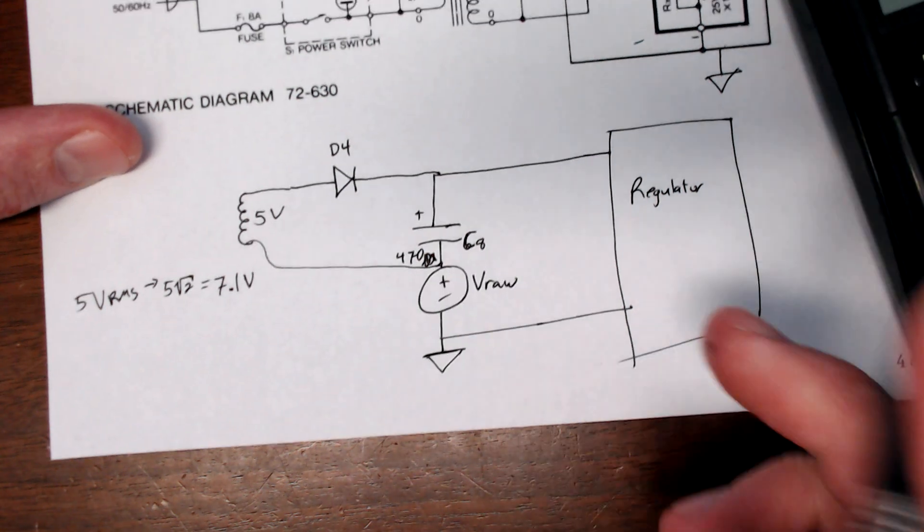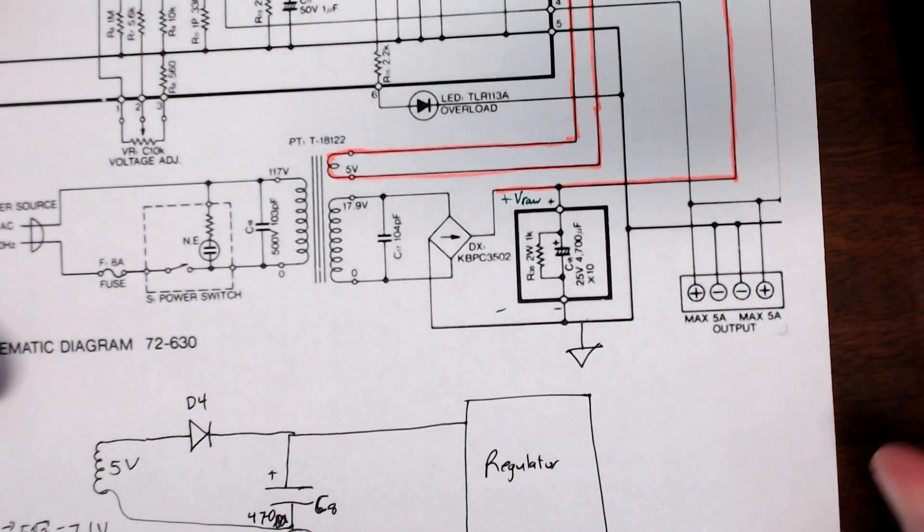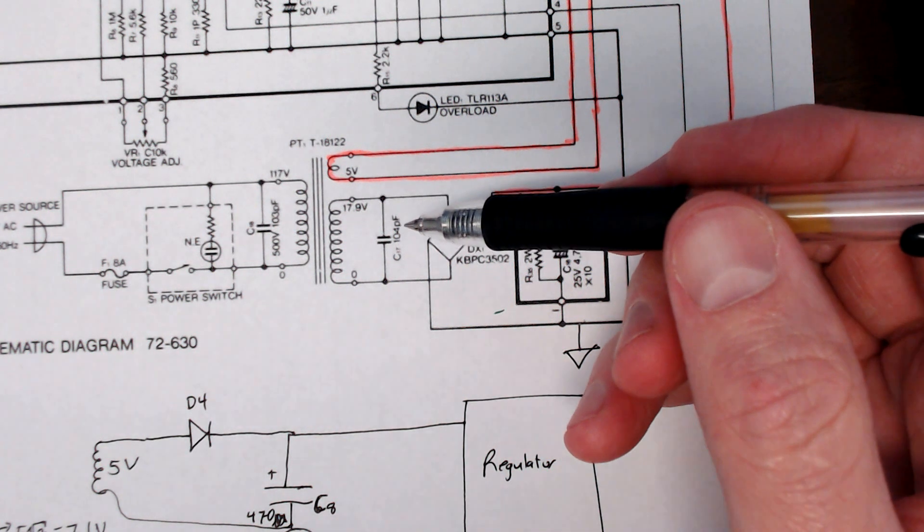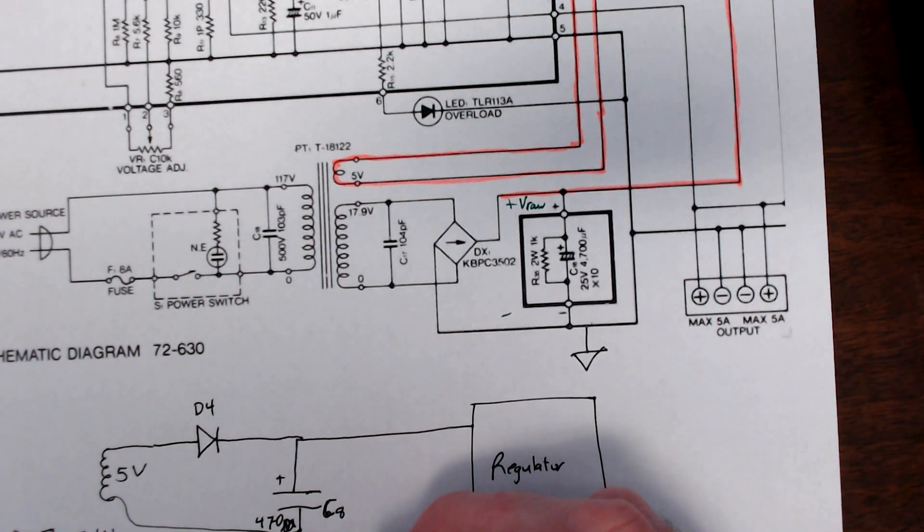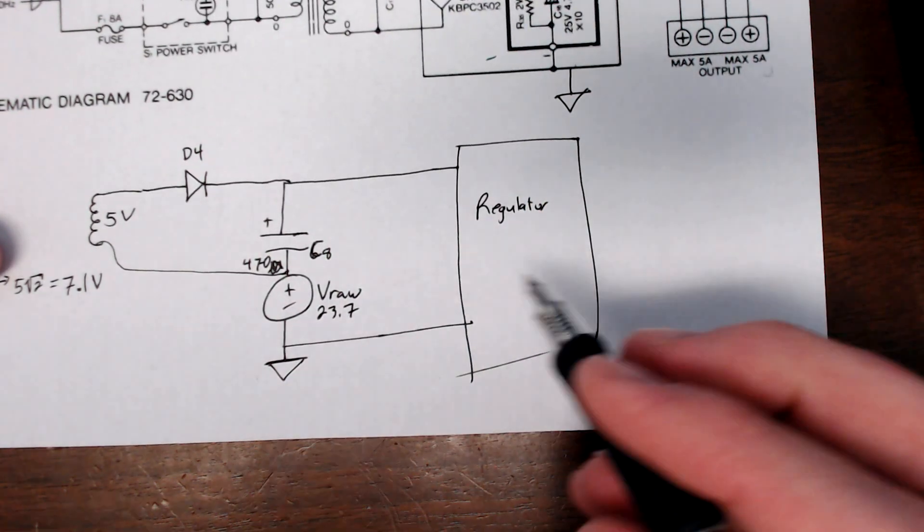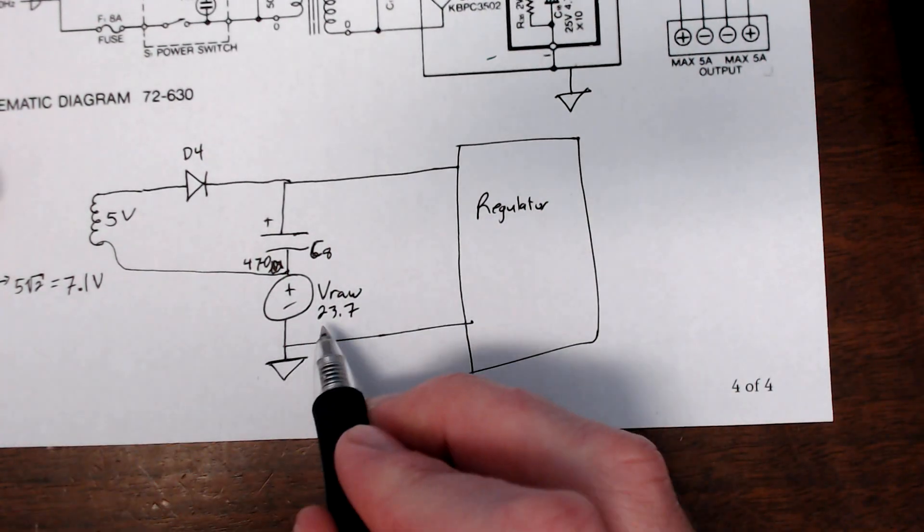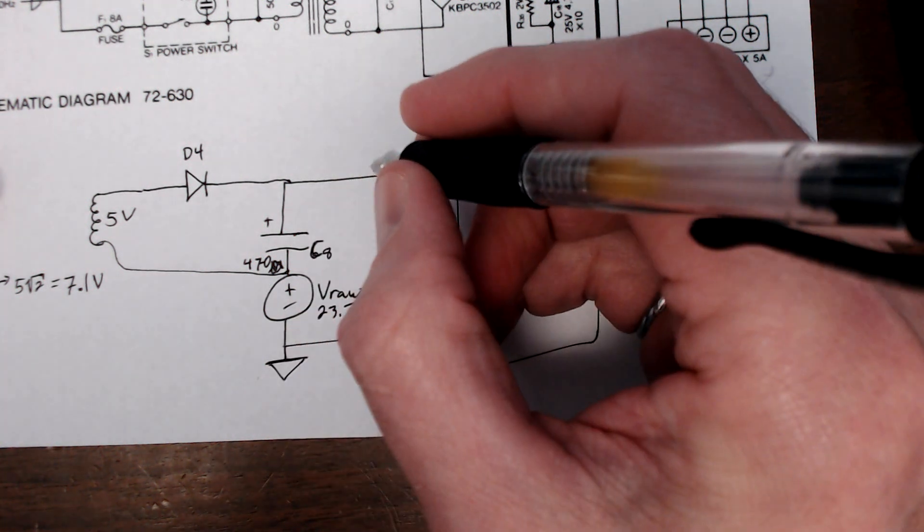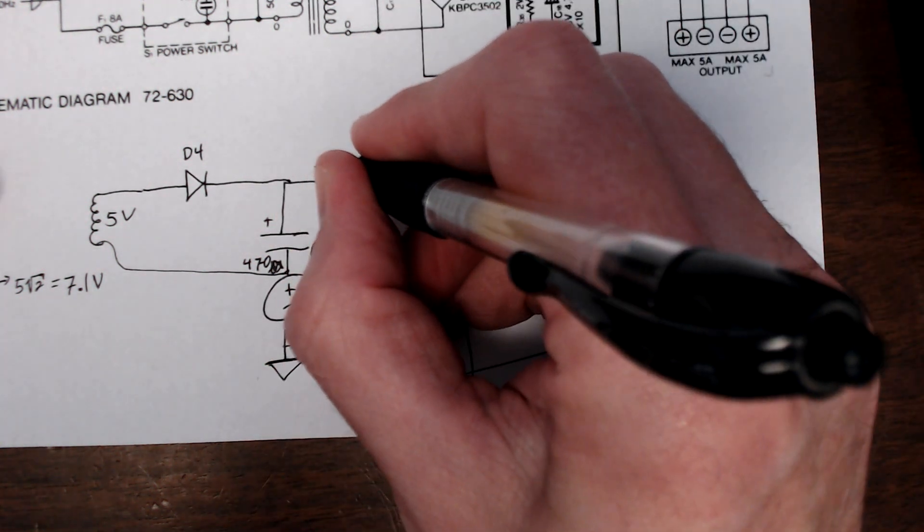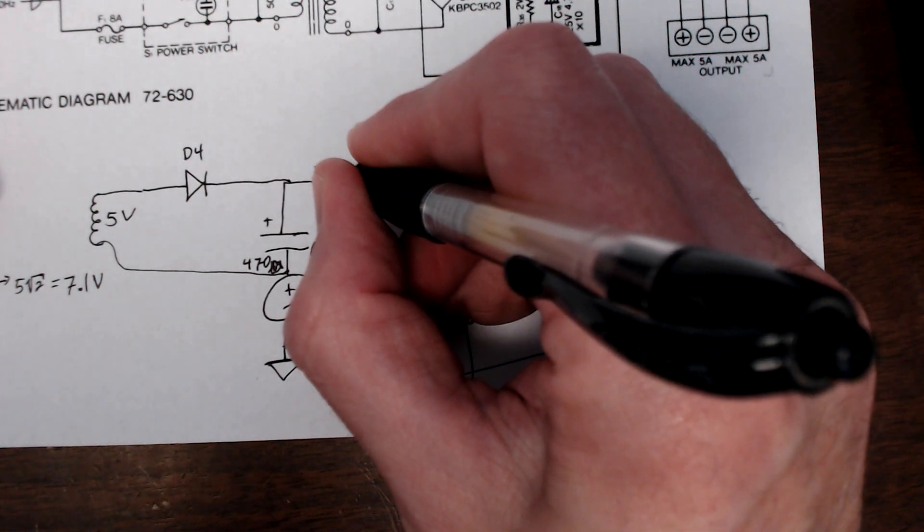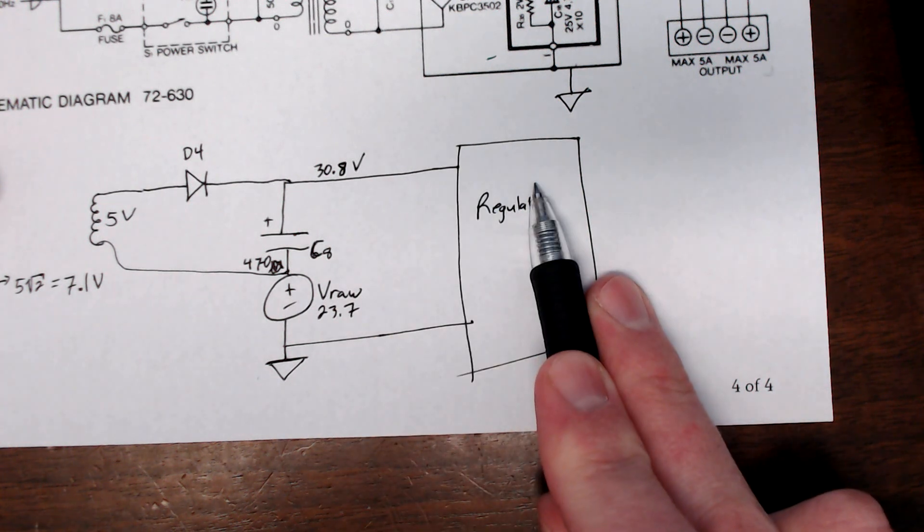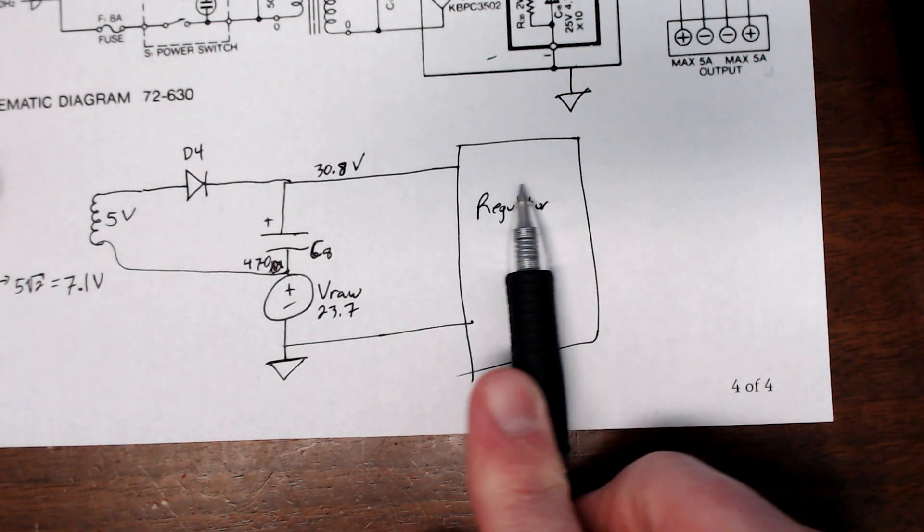So we have VRAW, which is what was it, 23 something. Previous page, 23.7 volts. There we go, 23.7 plus 7.1, that's what, 30? 30.7? 30.8, math. Volts. And now we have a larger power supply available to power up the regulator.